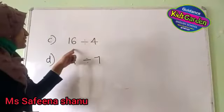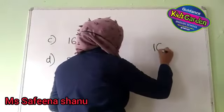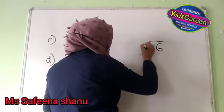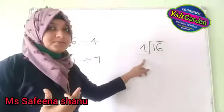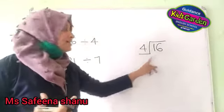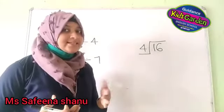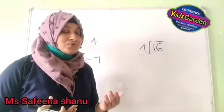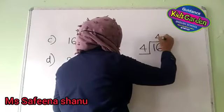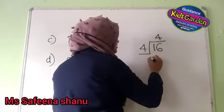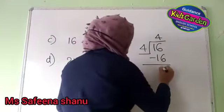Next: 16 divided by 4. Say the table of 4 till you reach 16: 1 four is 4, 2 fours are 8, 3 fours are 12, 4 fours are 16. 4 into 4 is equal to 16. 16 minus 16 is equal to 0.